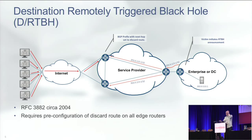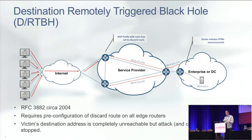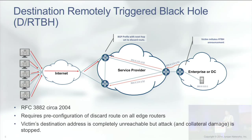This has been around for about 10 or 11 years. It was still better than the manual process we were doing before, but it does require pre-configuration of discard routes on all the edge routers and knowing what community you've got to send to your service provider to make this happen. And again, the victim's destination address is now completely unreachable for the duration of that attack.